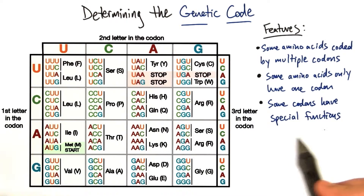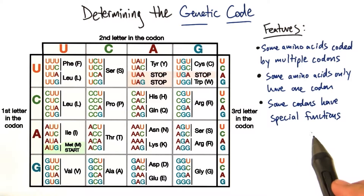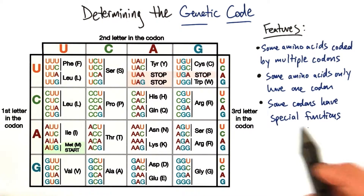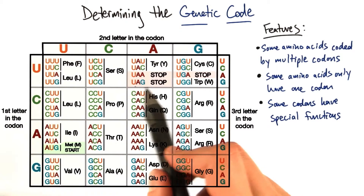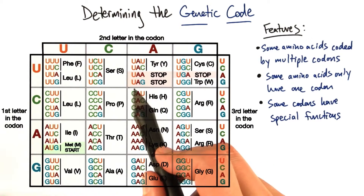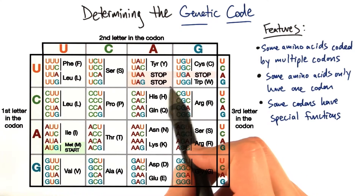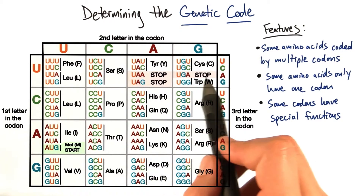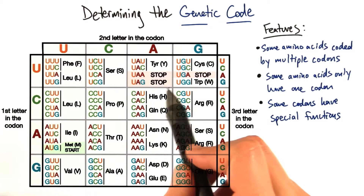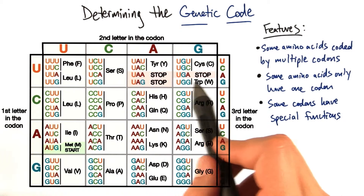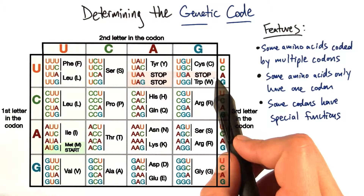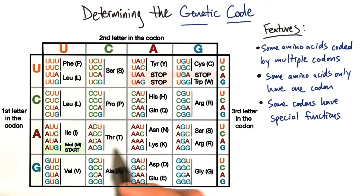Another feature is that some codons have special functions. For example, we see three appear: UAA, UAG, and UGA code for stop codons. There's no amino acid associated with them — they signal the stop for translation.